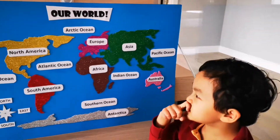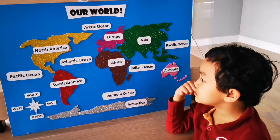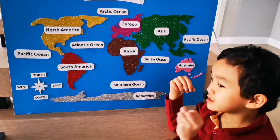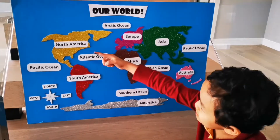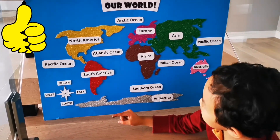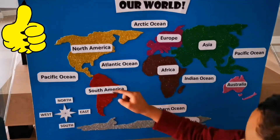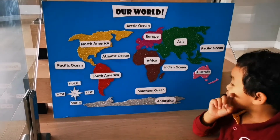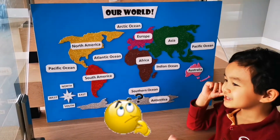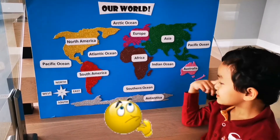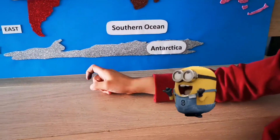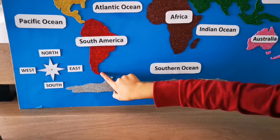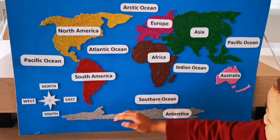Which continent is connected to South America? North America! That is because you can see it is connected — that's where America is. Which is the coldest continent? You're right, it's Antarctica. That is because South America is cold on its tail, and when I point it here, that means it's right where it is.